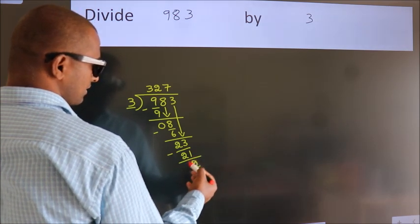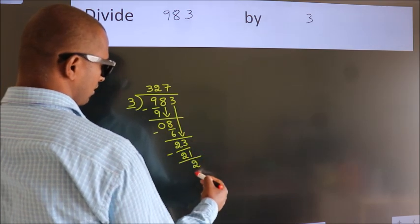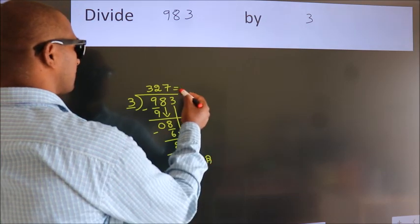After this, no more numbers to bring it down. So we stop here. This is our remainder. This is our quotient.